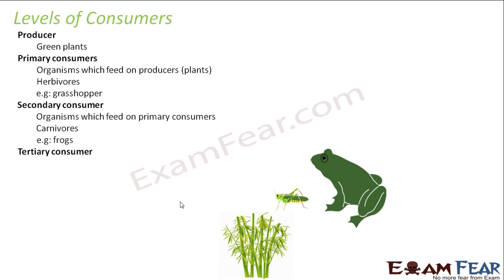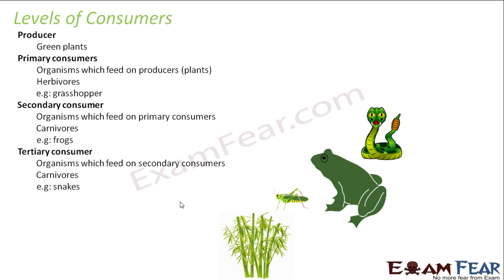Then comes the tertiary consumer — those which feed on the secondary consumer. These are also carnivores. Carnivore is a very general word; it means any organism which feeds on another organism. So whether it is a frog eating a grasshopper or a snake eating the frog, both are carnivores because both are eating other animals. Just that the level of consumer differs — a frog is a secondary consumer whereas a snake is a tertiary consumer.